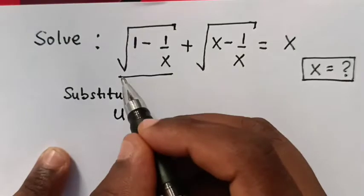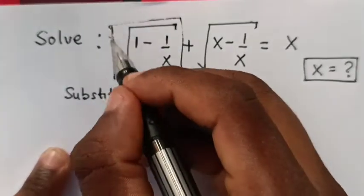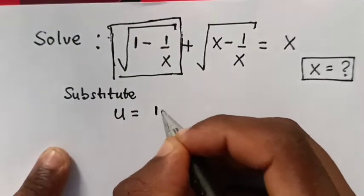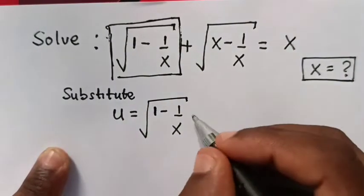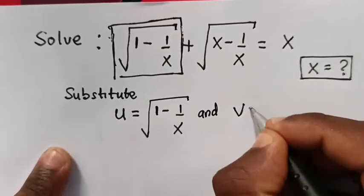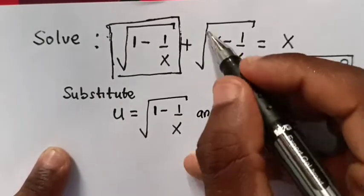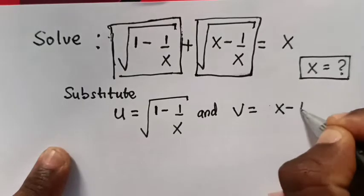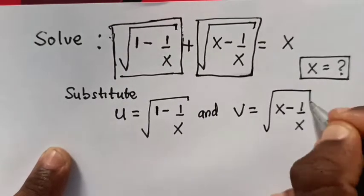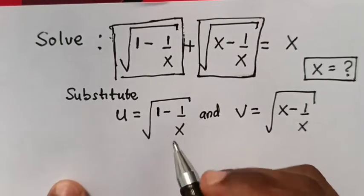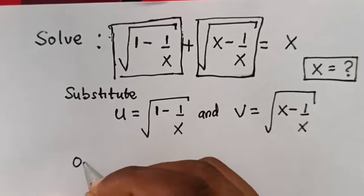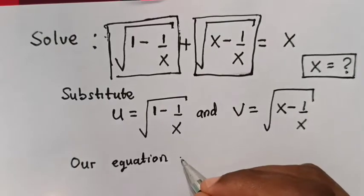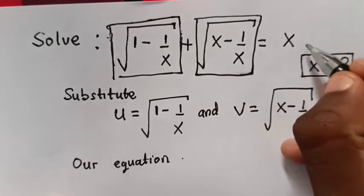We substitute u equals the square root of 1 minus 1 over x, so u is equals to square root of 1 minus 1 over x. And v we substitute is equals to square root of x minus 1 over x. Now our equation, let's call this equation 1.